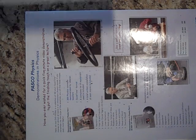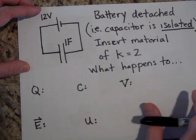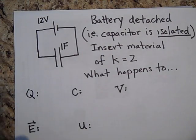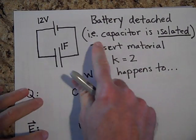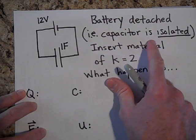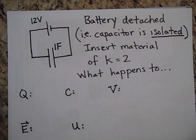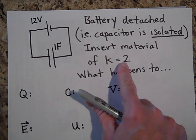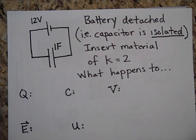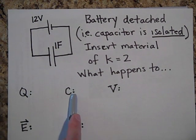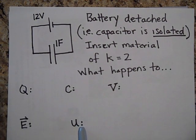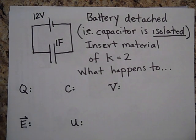This time we're going to detach the battery. We charge the capacitor up and then remove the battery — this is an isolated capacitor, meaning the charge isn't allowed to leave. We insert a material of k equals two. What happens to Q, C, V, the electric field, and the energy stored? Go ahead and pause and try to figure these out.